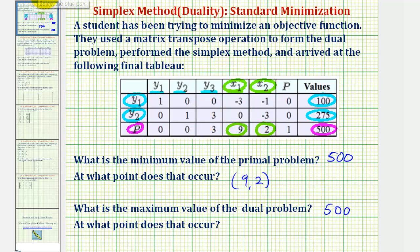So our point would be y sub one, y sub two, y sub three. The point is (100, 275, 0).